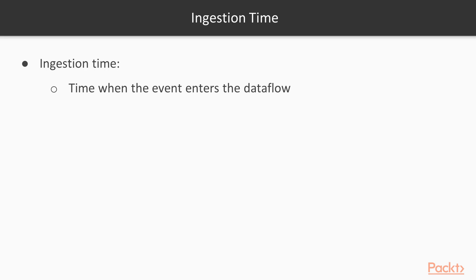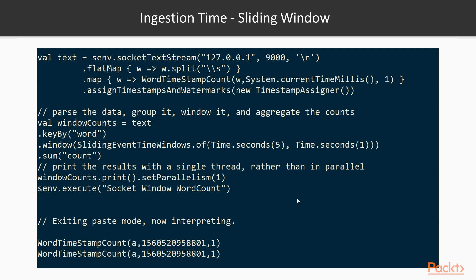The next time characteristic is ingestion time — when the event actually enters the data flow for the first time. Just because an event is coming in doesn't mean it's being processed yet, which is the difference between ingestion time and eventual processing time. If you look at the code for a sliding window on ingestion time, there isn't much difference except that the time characteristic is set to ingestion time instead of event time. That's the beauty of the Flink API — once you get hold of one technique, you can use it for other examples too.